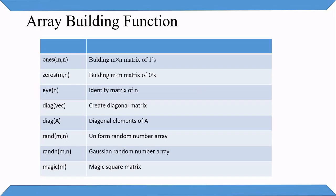When building arrays we can use: ones(M, N) to build an M by N matrix of ones; zeros(M, N) to build an M by N matrix of zeros; eye(N) which creates an identity matrix of size N by N; and rand(M, N) which generates a uniformly random array. There is also the magic(M) function.